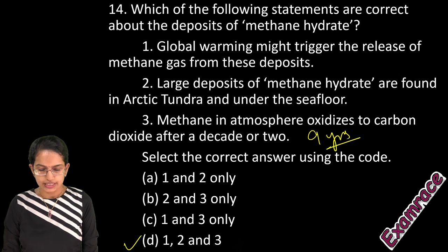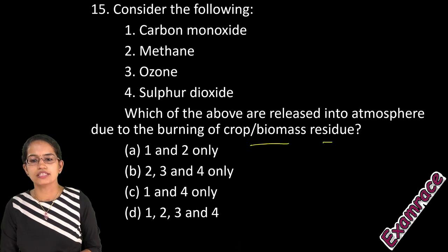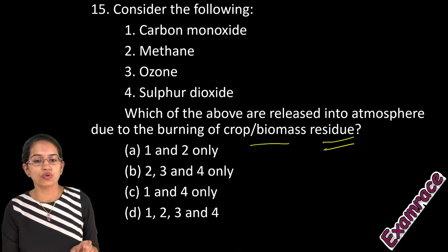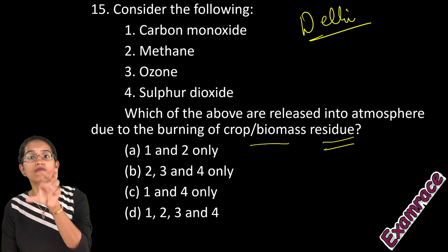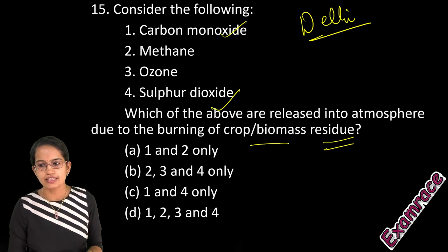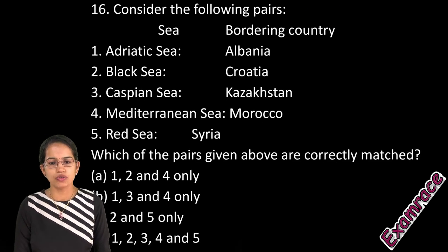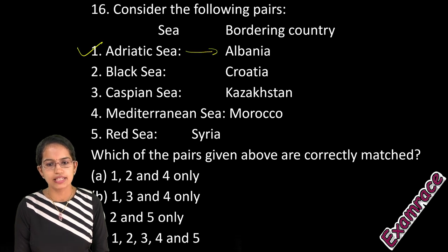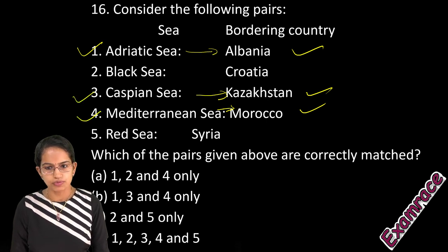On the question of gases released from burning crop residue — a recent issue related to Delhi smog, covered in the Lancet committee report and Down to Earth — carbon monoxide and sulphur dioxide are correct answers, along with particulate matter and black carbon. For the sea-country matching question: Adriatic Sea with Albania, Caspian Sea with Kazakhstan, and Mediterranean Sea with Morocco are correct. Black Sea is far from Croatia and Red Sea is not near Syria, so options 1, 3, and 4 are correct.